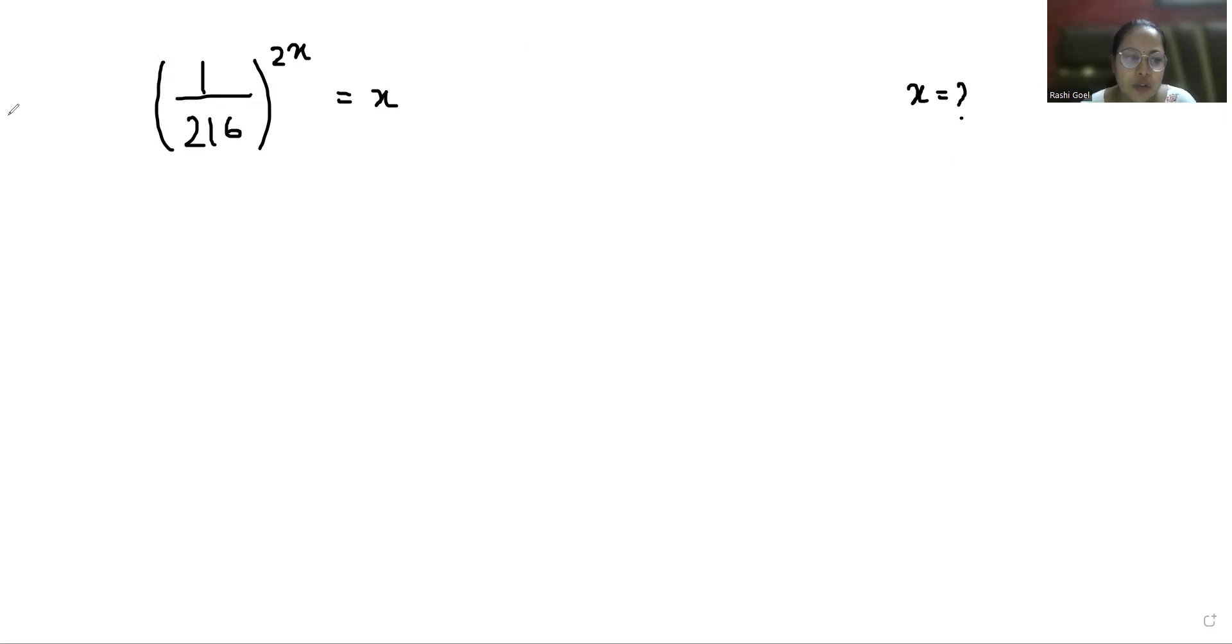216 we can write it as 6 times 6 times 6 which is equals to 6^3. So (1/6^3)^(2x) = x. Another exponent rule: 1/a^n we can write it as a^(-n), so (6^(-3))^(2x) = x.